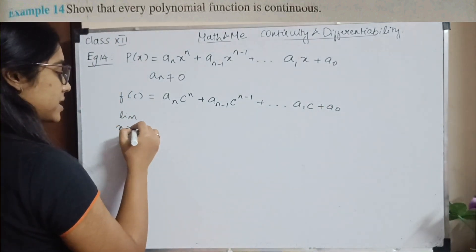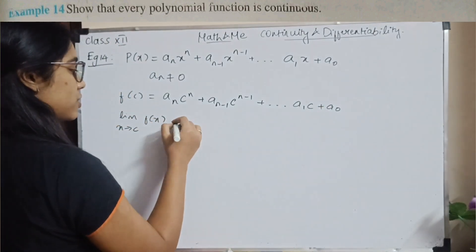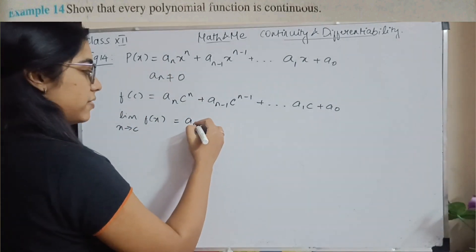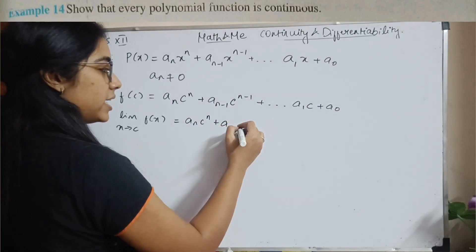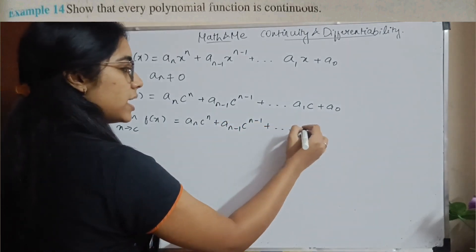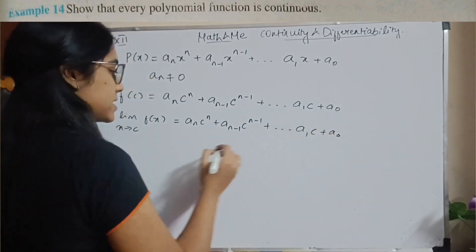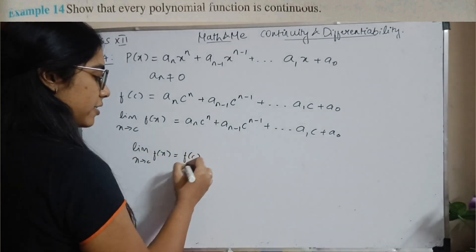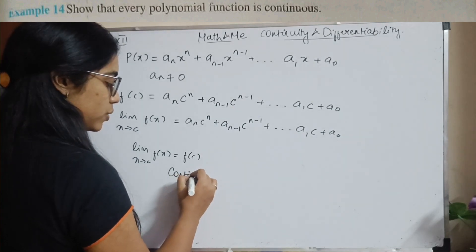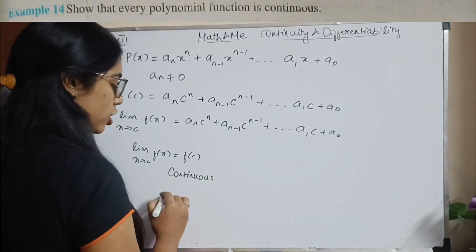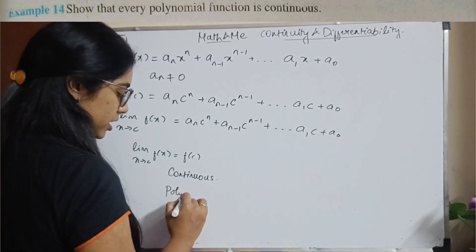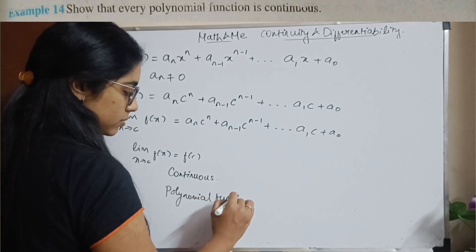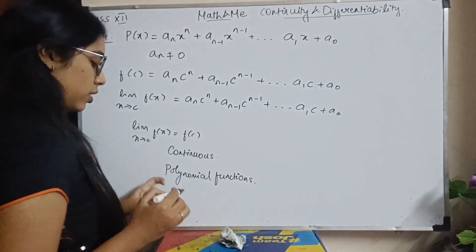For f of c, wherever I have x I substitute the value of c: f of c equals a_n c^n plus a_(n-1) c^(n-1) and so on, down to a_1 c plus a_0. For the limit x tends to c of f of x, wherever I have x I substitute c — I get a_n c^n plus a_(n-1) c^(n-1) and so on, a_1 c plus a_0. So limit x tends to c of f of x equals f of c — the polynomial function is continuous. Always remember: polynomial functions are continuous.